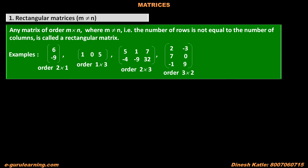The last matrix contains 3 rows and 2 columns. Again, the number of rows is not equal to the number of columns, so it is also a rectangular matrix.